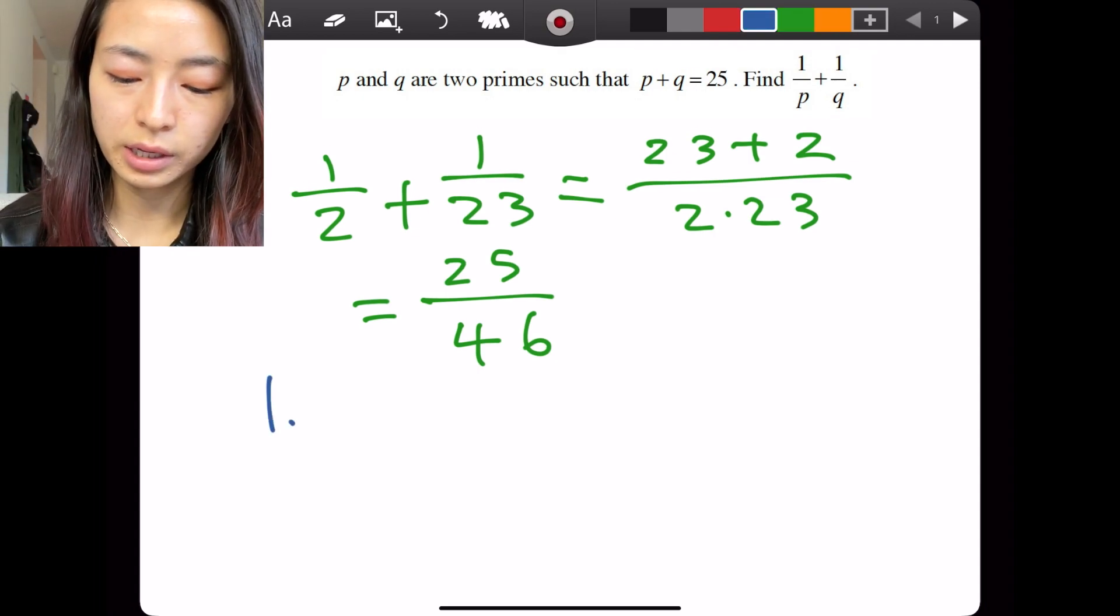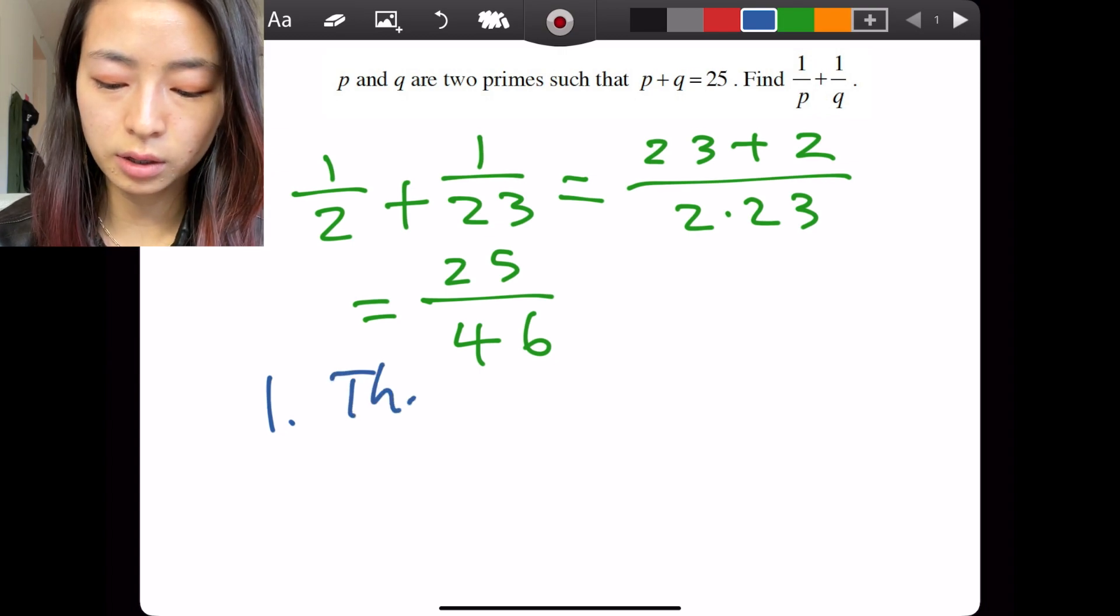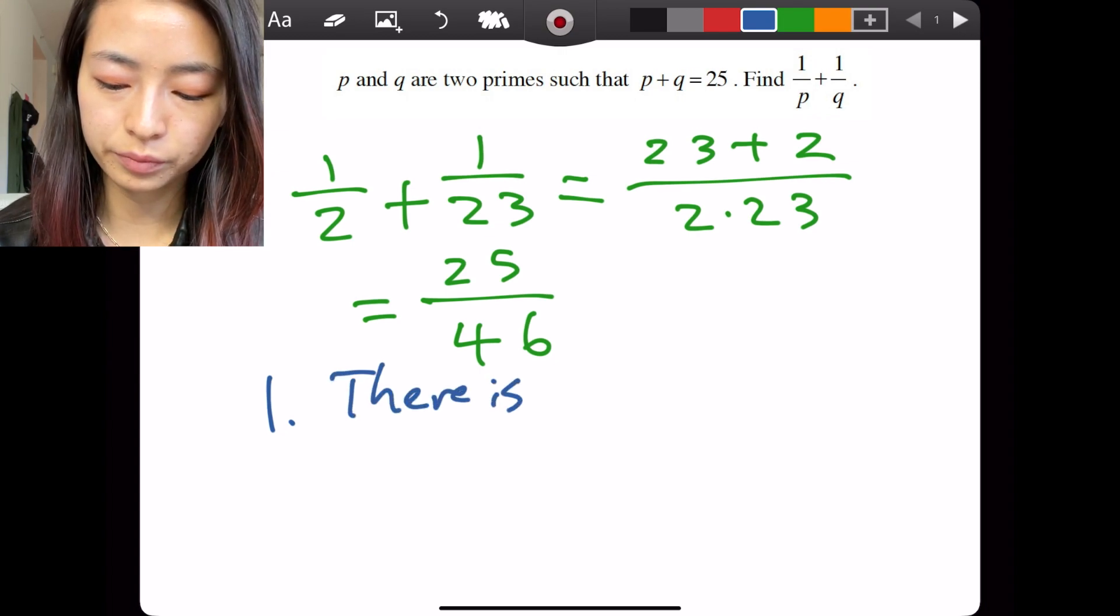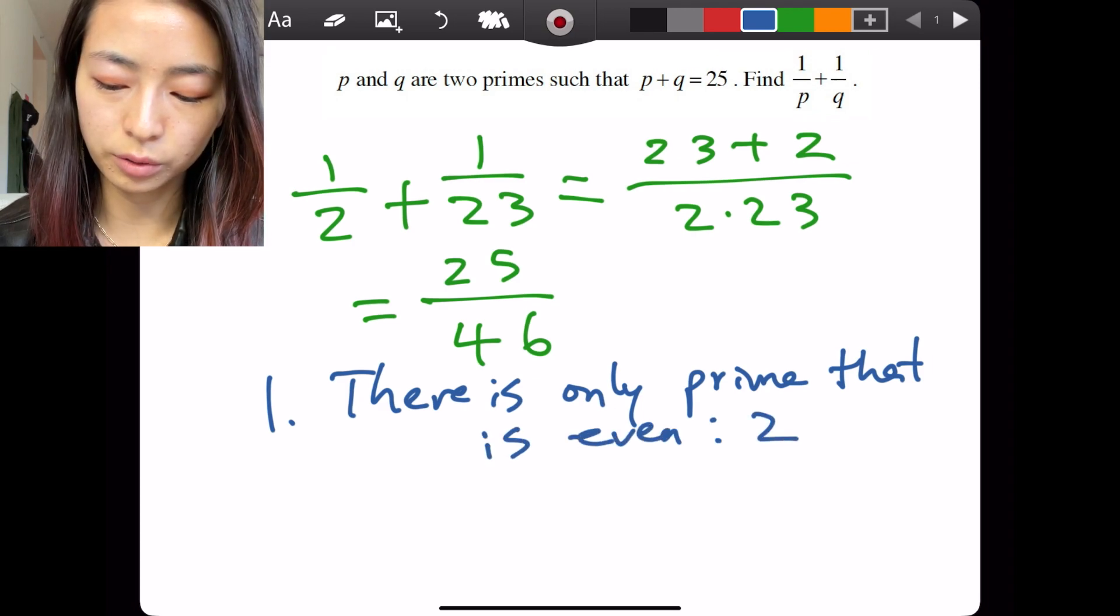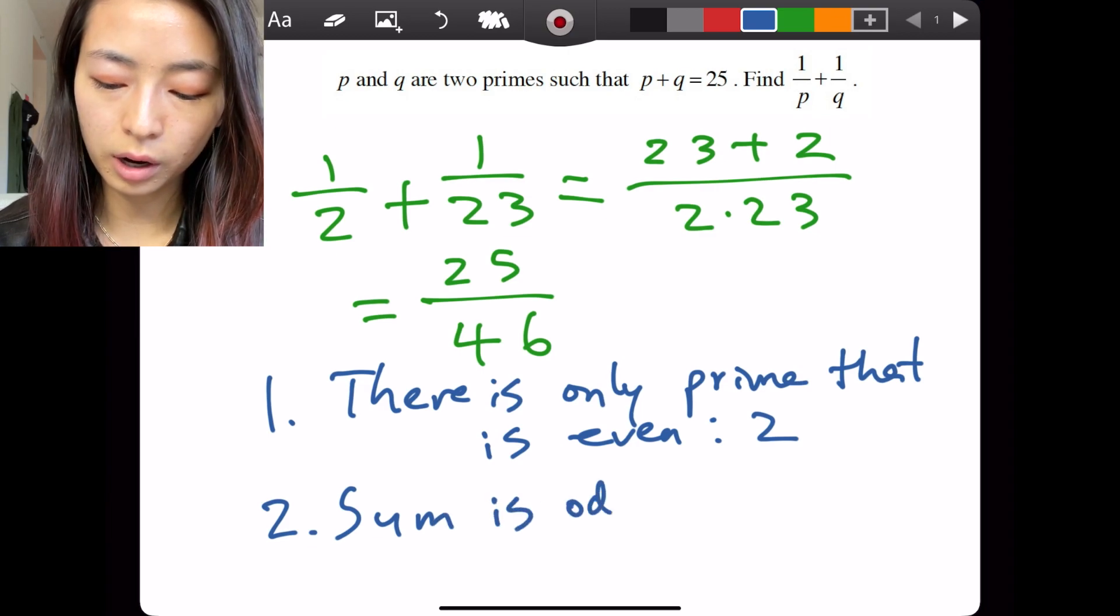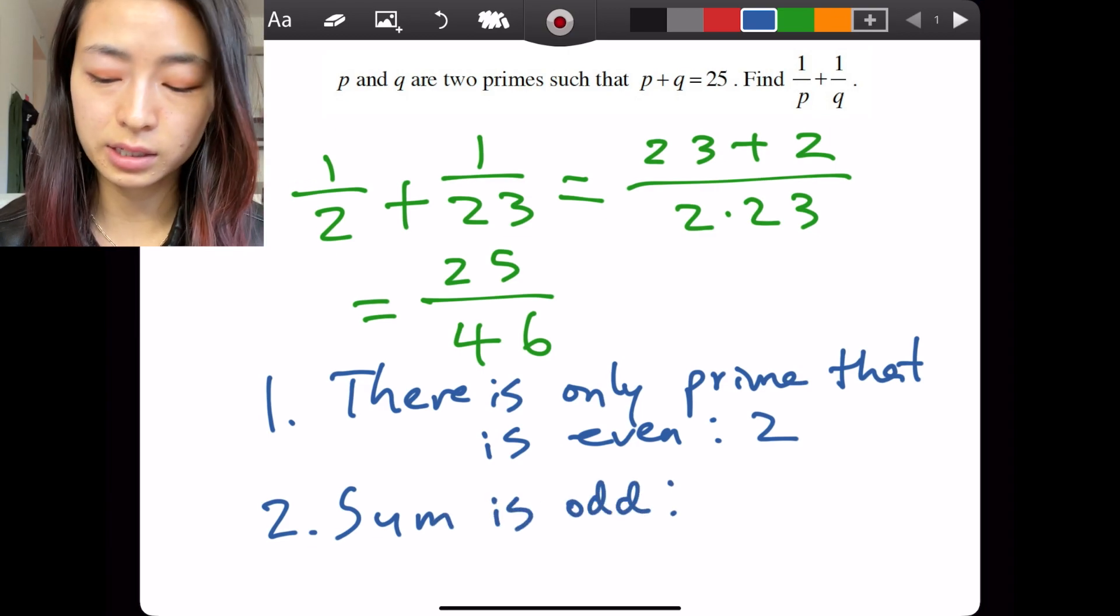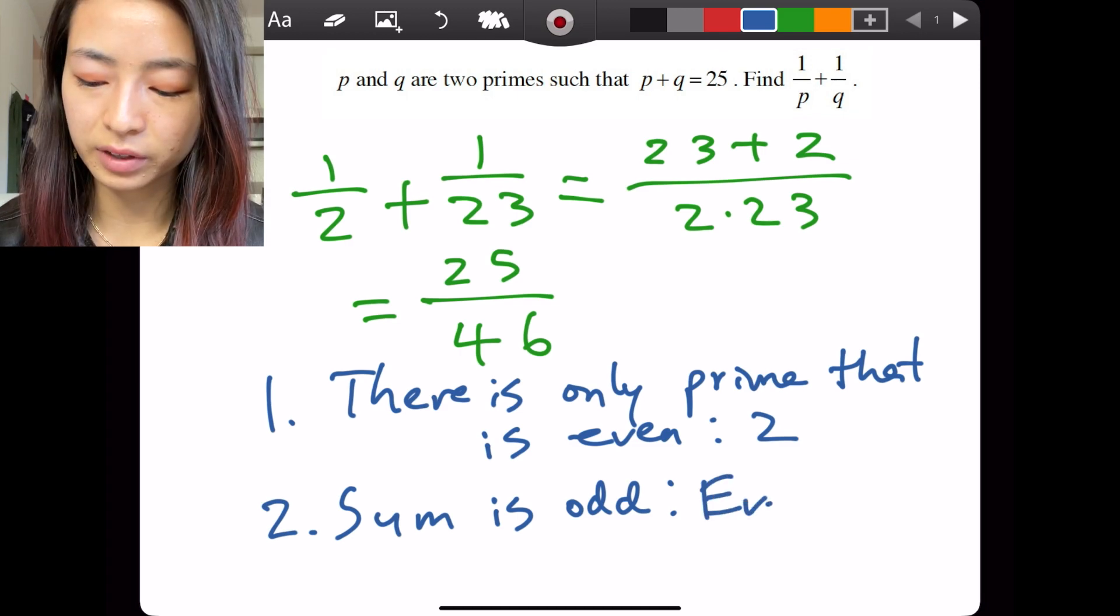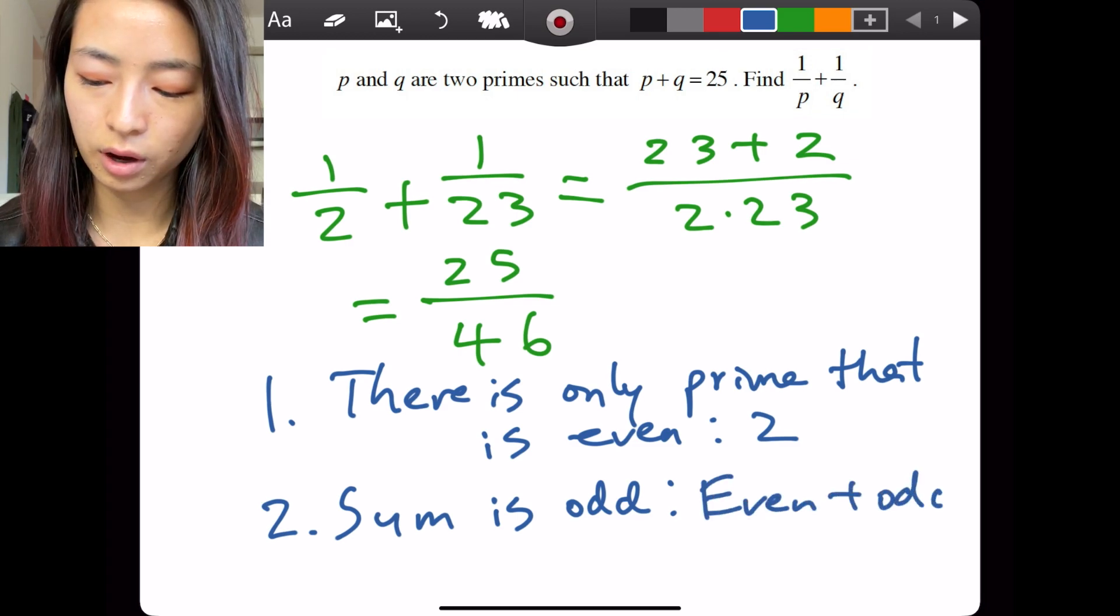Number one is to recognize that there's only one prime that is even, two. And number two, the sum is odd, which means that the two numbers are even and odd.